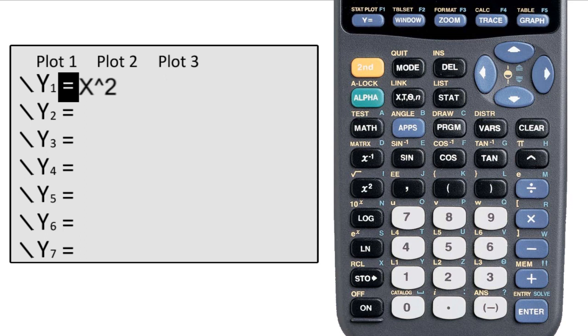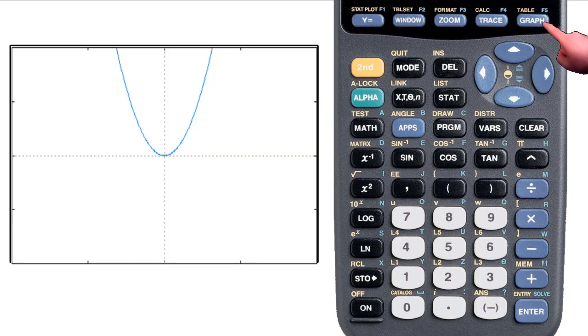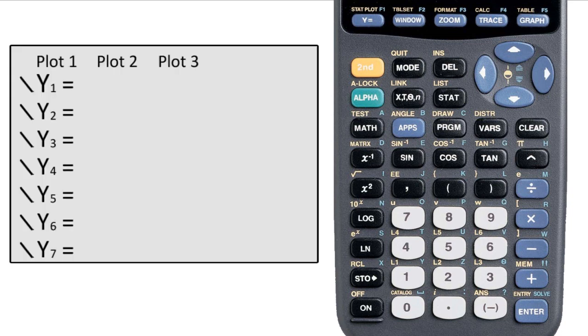Now let's take a look at the graph. Press the graph key on the far right side of the calculator and you'll see the parabola that we just entered. This is the most basic way to graph a function. Put the equation into y equals and press the graph button.